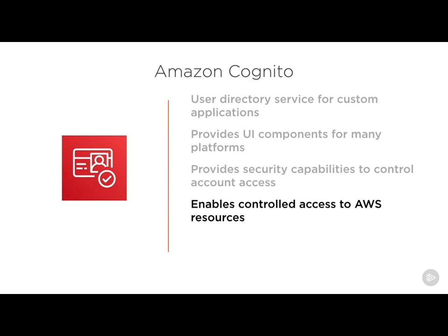For example, let's say you have a web application that lets users upload their photos. You would want to be sure that users have access to a specific part of an S3 bucket that's just for them. With Cognito, you can configure access to specific pieces of AWS infrastructure for a user, without having them sign up for an IAM user account.